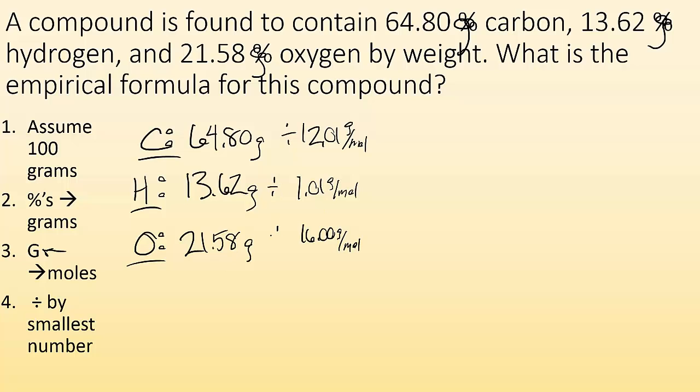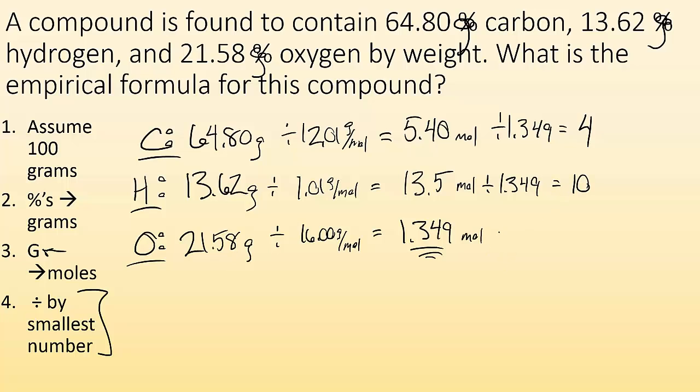And all of these are divided. And then I'm going to get the moles of each. So I plug it into my handy-dandy calculator. For carbon, I get 5.40 moles. For hydrogen, I get 13.5 moles. And for oxygen, I get 1.349 moles. So now what's my last step? It's divided by the smallest number. Well, the smallest number is this 1.349. So I'm going to divide everything by that number, 1.349. For that one, I get a number that's almost exactly 4. I divide by 1.349 for this one, and I get something that's almost exactly 10.